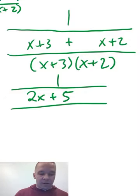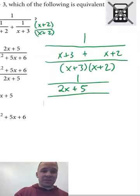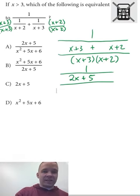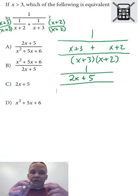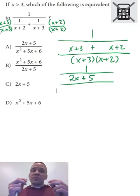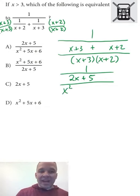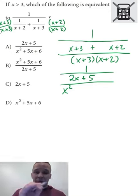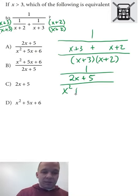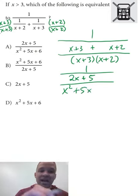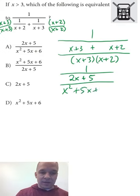My denominator, if we take a look at all of my answers here, they're all foiled out at this point. They're all distributed out. So I'm gonna do that. I'm gonna have X times X is X squared, and then X times two is two X, and three times X is three X. Two X plus three X gives me five X, and then three times two is six.